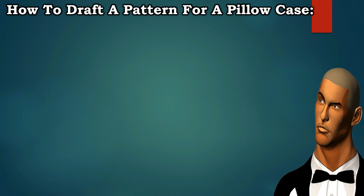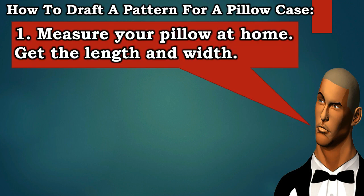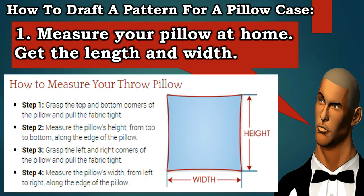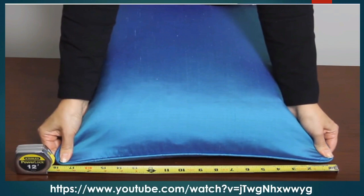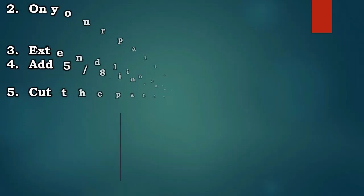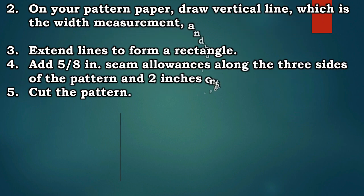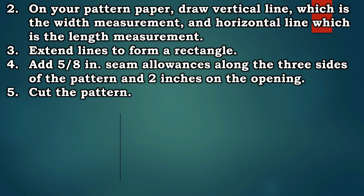How to draft a pattern for a pillowcase: Step 1. Measure your pillow at home — get the length and width. Step 2. On your pattern paper, draw a vertical line which is the width measurement, and a horizontal line which is the length measurement.